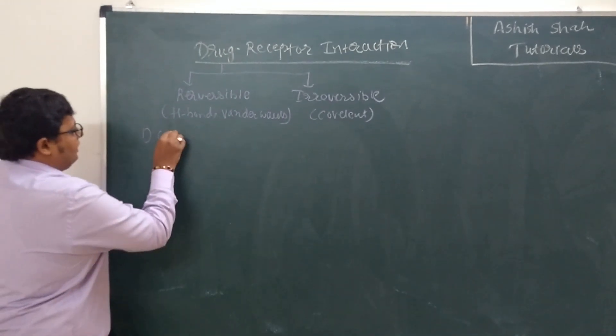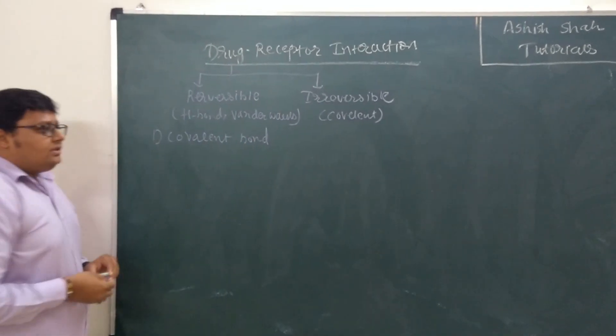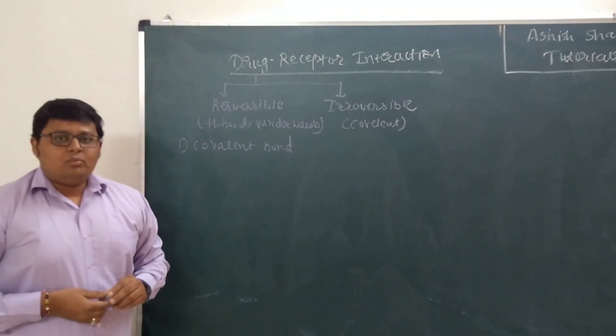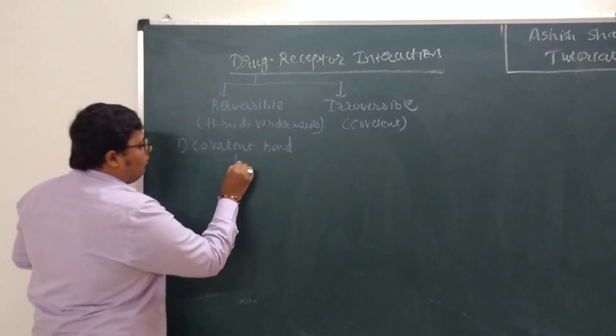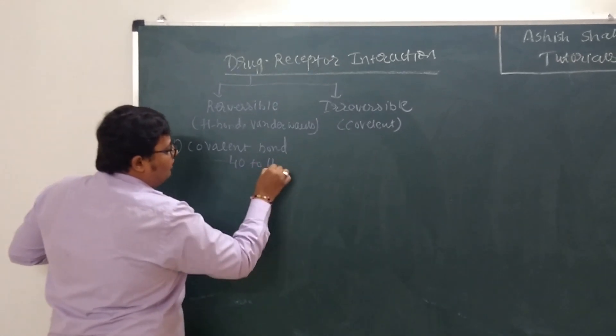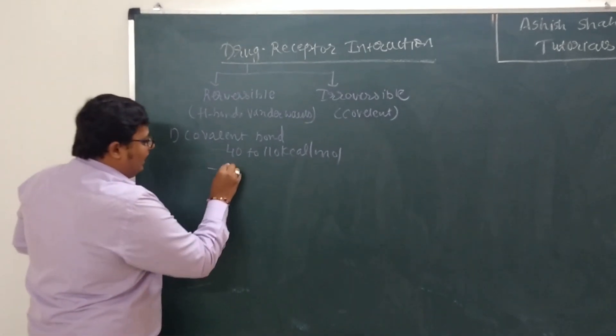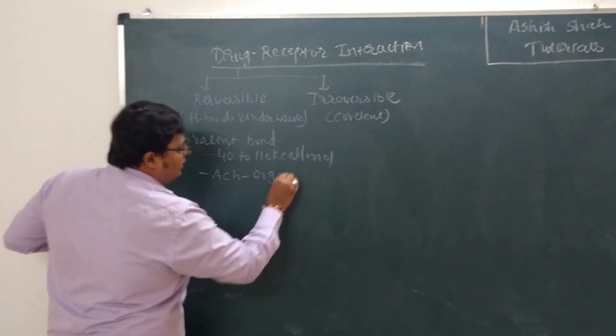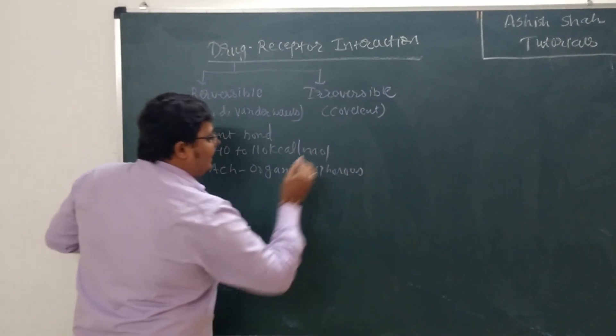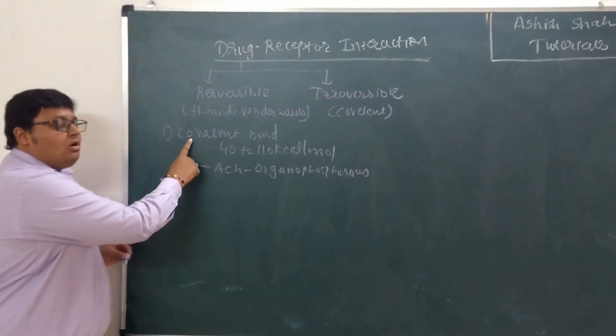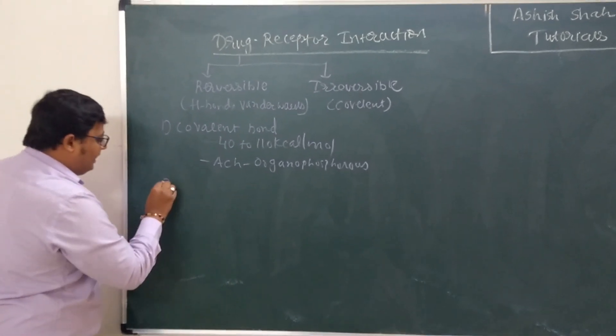So very first, we are starting with the formation of covalent bond. Drug can bind with a receptor with formation of covalent bond. Now remember this is the strongest one. The energy involved is around 20 to 100 kcal per mole. And you can take the example of aspirin binding. This follows this kind of binding.